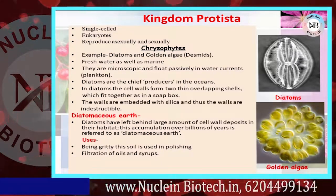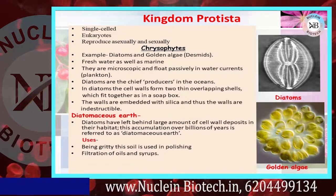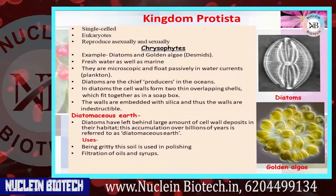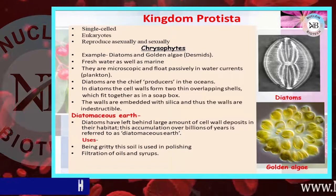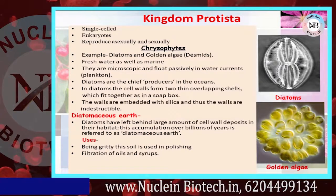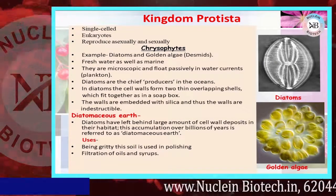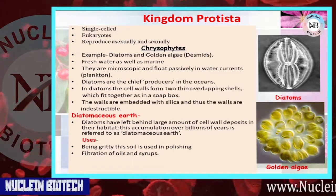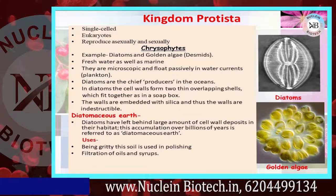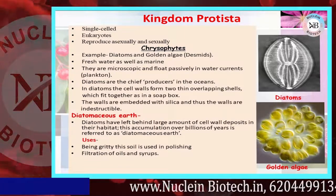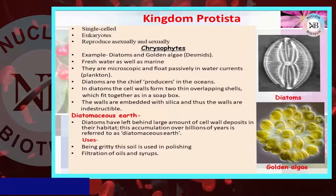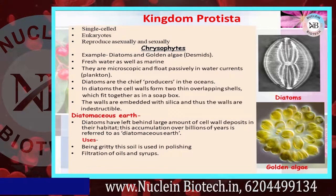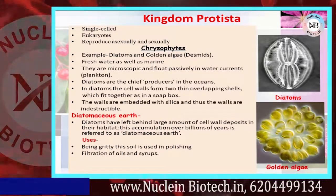Diatoms are the chief producers in the oceans. In diatoms, the cell wall forms two thin overlapping shells. Approximately 90% of phytoplankton are diatoms, which helps maintain ecological balance. About 98% of diatoms are useful.